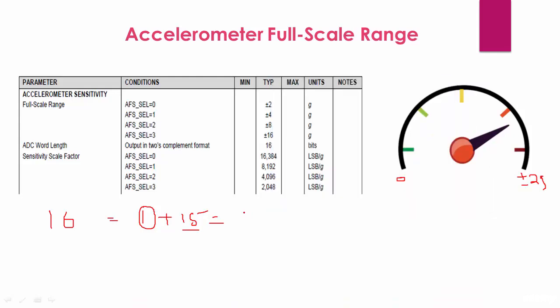So the output can swing between plus or minus 32,768. This is the maximum reading that can be produced by the sensor. And this table here says that if you are operating in the full-scale option zero,